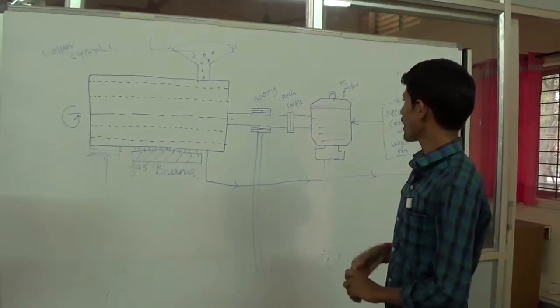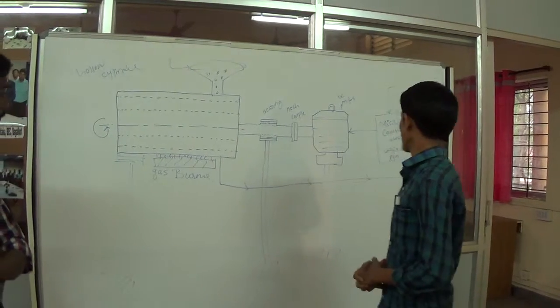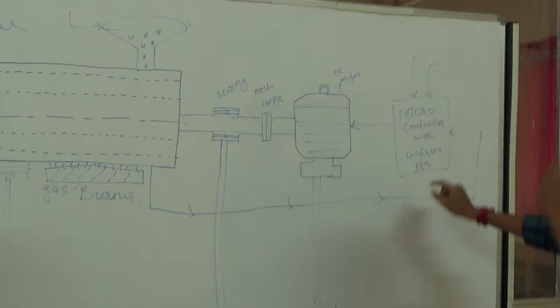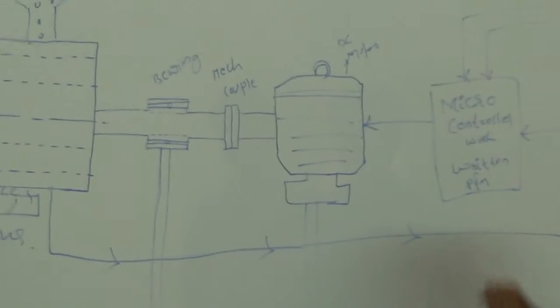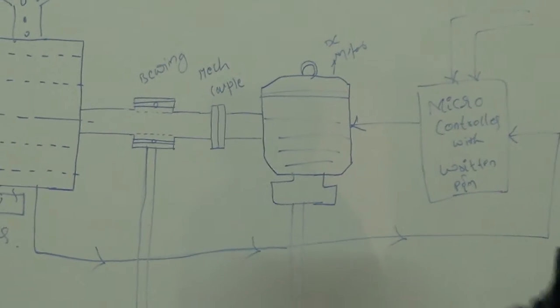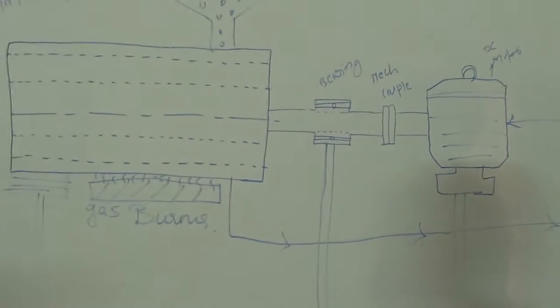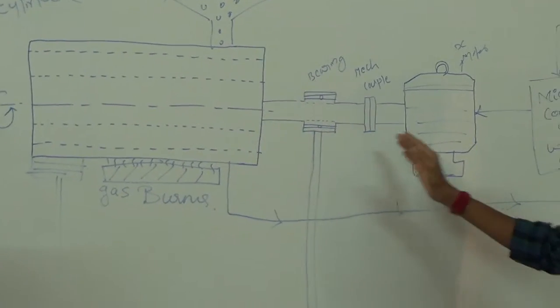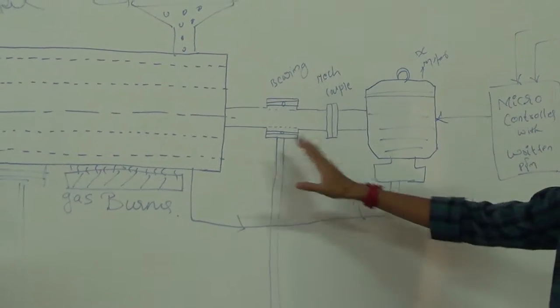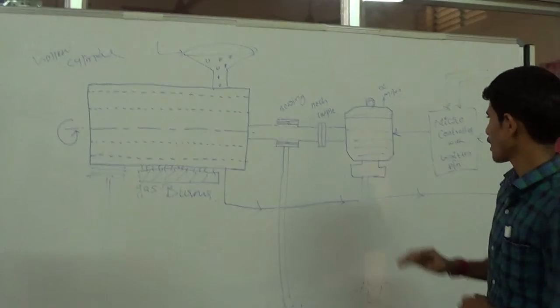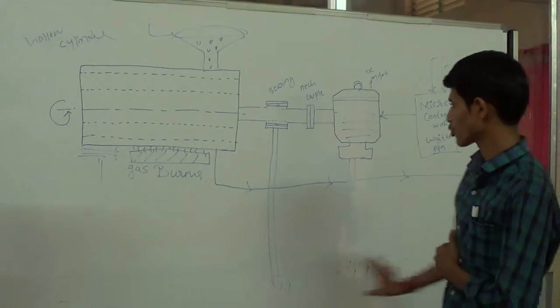Here the required RPM of the cylinder is controlled by the microcontroller. As already written, the program input is connected to the DC motor through the bearings and couplings. Then all this system is supported by four stands.